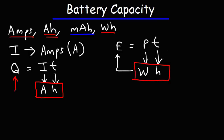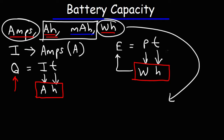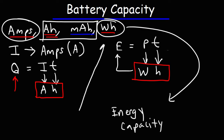Here's what you need to know: amps is a unit of current; amp hours and milliamp hours is a unit of charge capacity; watt hours is a unit of energy capacity. If you want to know how much energy is stored in a battery, look at the value in watt hours. If you want to know how much charge is stored, look at amp hours or milliamp hours. Watt hours is a measure of energy capacity; amp hours is a measure of charge capacity.